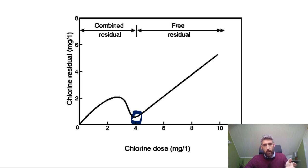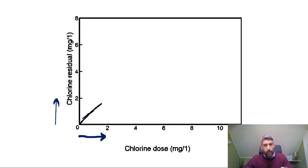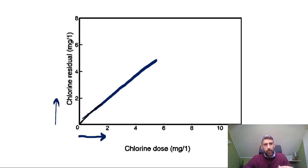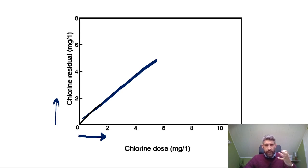In a badly run pool you won't achieve this. What will happen is that the combined chlorine just keeps increasing. Because bathers are not taking a shower and you're not adding fresh water to dilute it away, there's always going to be a reaction producing monochloramine and dichloramine. It can even go further — the dichloramine starts to react with further chlorine and you get trichloramine being created, which is a very aggressive, undesirable substance that creates very irritating pool water — irritating to the eyes and the respiratory system, and very damaging to the building as well.